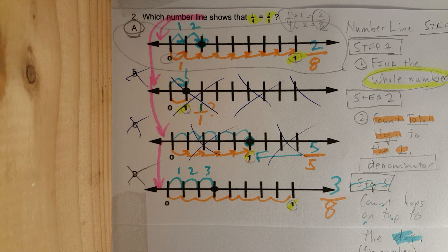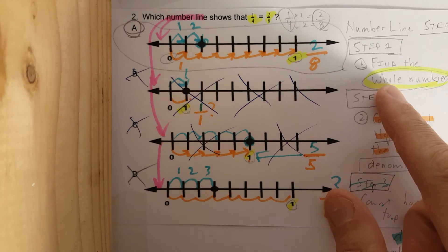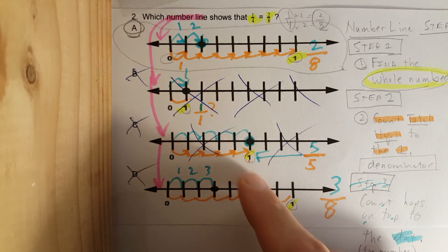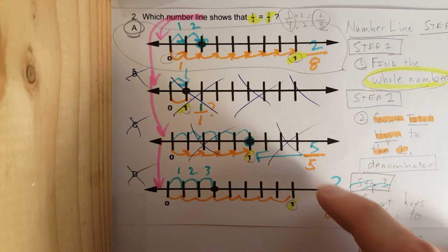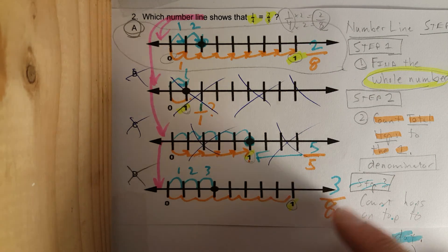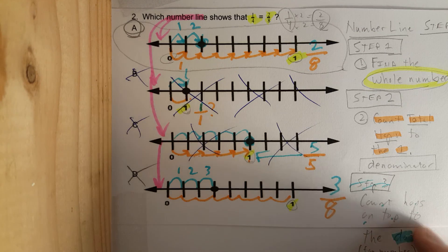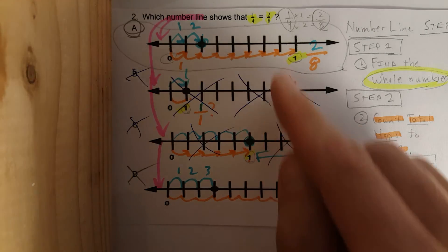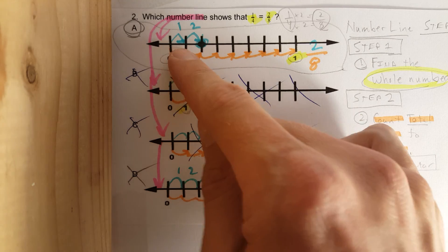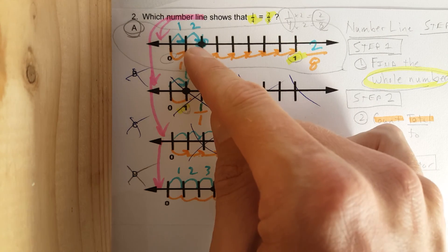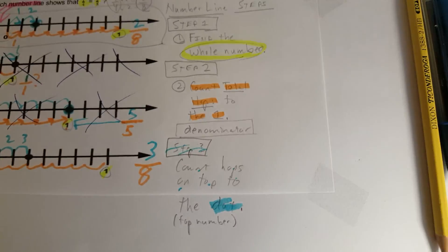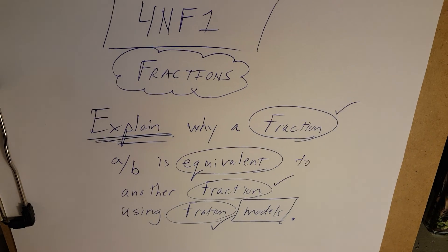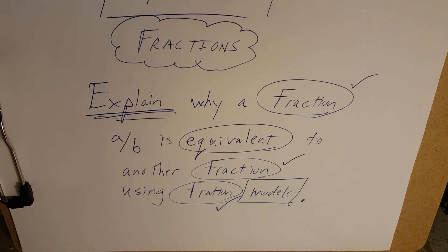I hope this helps. That was very thorough, but once students get the hang of it they can probably knock this out in 10 or 20 seconds. You find the whole number — which in this problem was one — you count the total hops for the denominator, then count the hops to the dot for the numerator. Whichever number line had two over eight was A, and that's your answer. Another one will come tomorrow — take great notes, see ya!